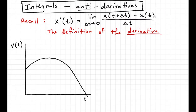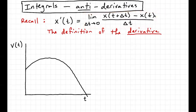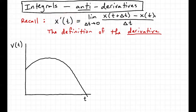Let me start by having you recall the definition of the derivative. The derivative of a function — here the function is x — is this expression: a limit as delta t goes to zero of the difference in x at two different times divided by that difference in time. This notation is called prime notation, so x prime of t represents the derivative. For physics, taking a derivative of x with respect to time gives us the velocity as a function of time.